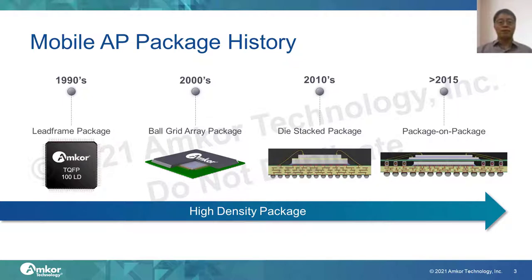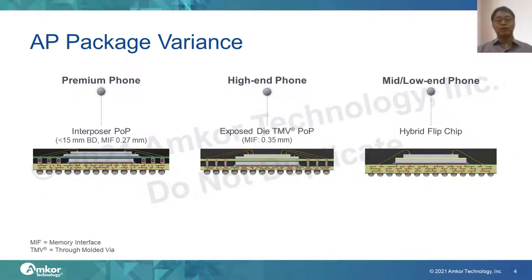More details on mobile AP packaging. This slide shows major AP package structures applied so far: from left to right — lead-frame, QFP, BGA, stacked CSP, and package-on-package. Major drivers are I/O density and memory placement, which are highly related to high-performance achievement. BGA helps to overcome I/O count limitations. Stacked packages put memory chips inside the AP package. Package-on-package enables more memory function and greater design flexibility. The big challenge in AP packaging is how to achieve high I/O density within a given footprint area and memory interface.